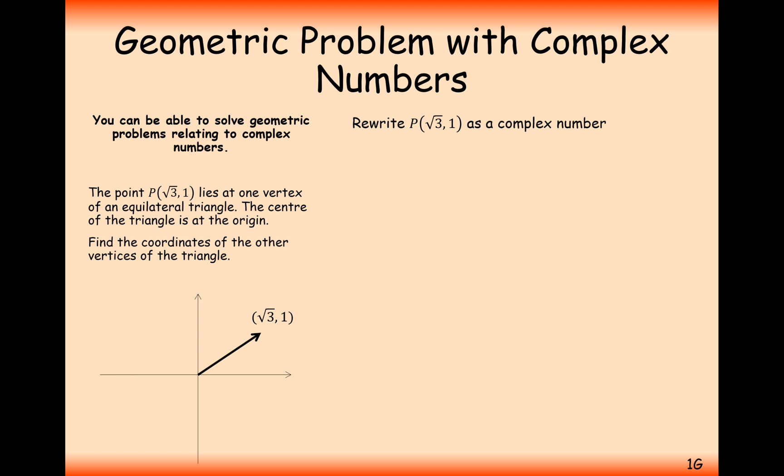So the first thing we're going to do to make this into a complex number problem is to write it as a complex number. But then we're going to write it in modulus argument form because that's easier to deal with when we're rotating it around the circle. Because to rotate it around the circle and make an equilateral triangle, you just need to add 2π by 3 to the argument.